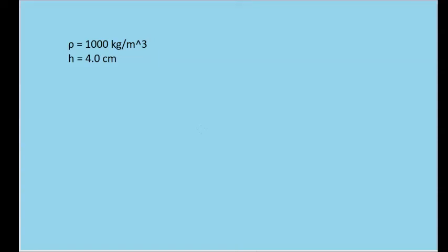In this problem, we're looking for the minimum gauge pressure in our lungs required to suck lemonade out of a straw to a height of 4.0 centimeters if the density of the lemonade is 1,000 kilograms per cubic meter.